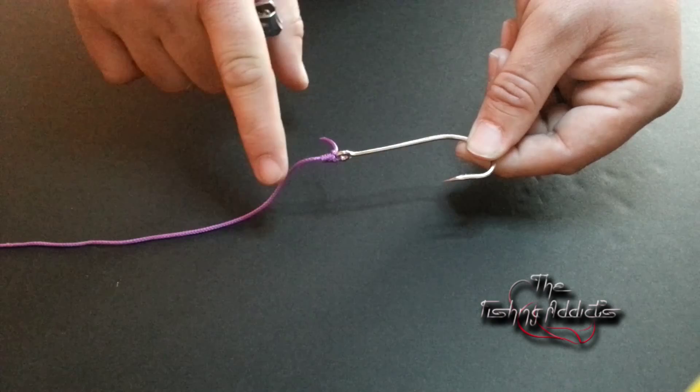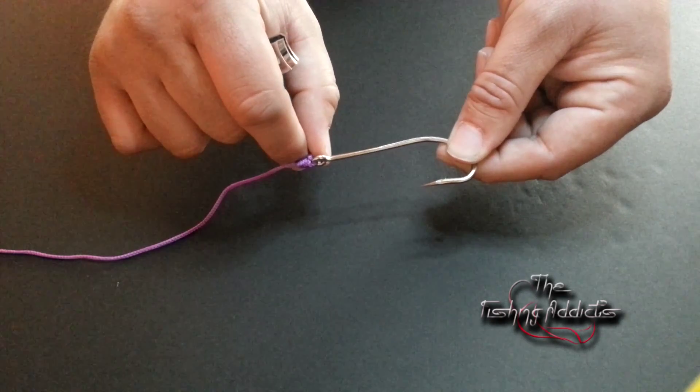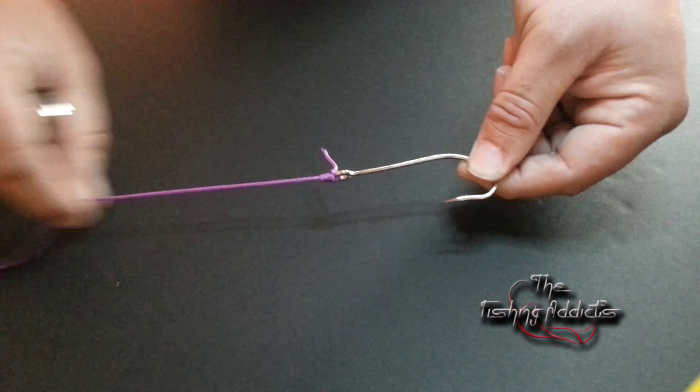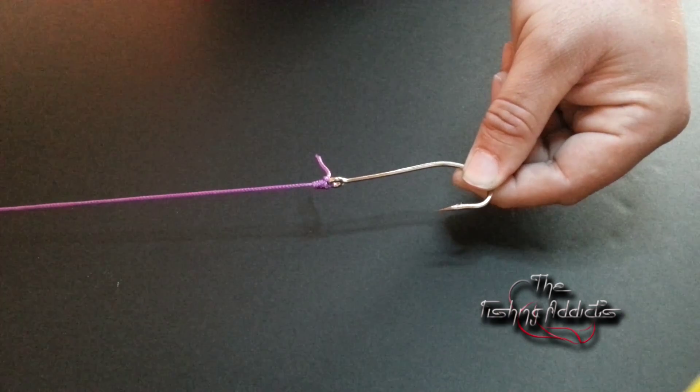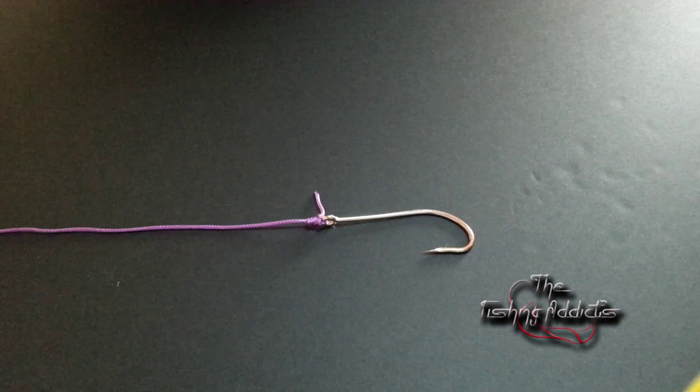And also it will help retain the bait above the hook shank. So if you slide a worm up the hook shank and it comes up over this, this tag will help to stop that coming back down over the hook and ultimately coming off the hook.